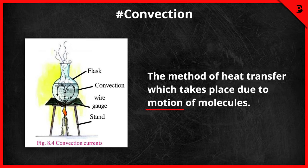Now, on heating the water, the water at the bottom comes in contact with heat and because of heat it spreads up, becomes light, and rises upwards. The cold water at the top, being heavier, comes down. This cold water comes in contact with heat and because of it, it again goes upward. You can see this movement with the help of potassium permanganate because of its color.